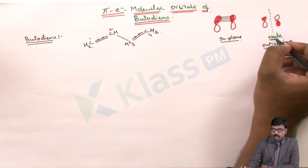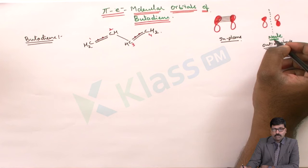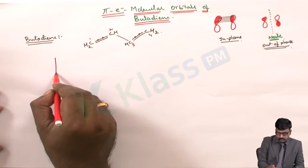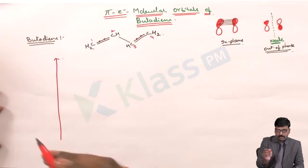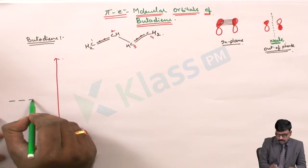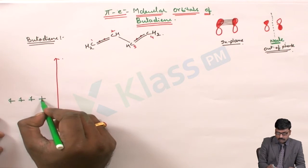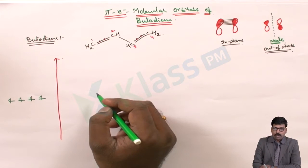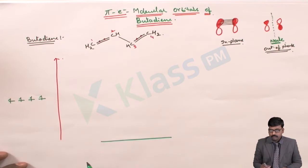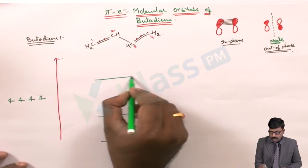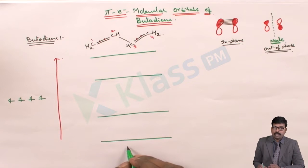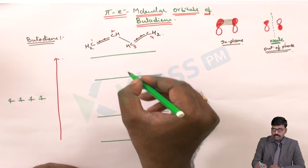We have to consider the number of nodes present at each energy level. First with zero nodes, second with one node, third with two nodes, and fourth with three nodes. We draw an increasing energy level axis. These are the single electrons from each carbon contributing to the pi electron cloud of butadiene, giving four combinations: zero nodes, one node, two nodes, and three nodes.